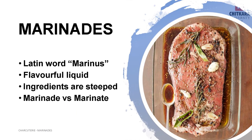A marinade is a seasoned liquid with various aromatics in which meat, poultry, game and even vegetables are steeped. In other words, marinades are a mixture of oil, seasoning and often acidic ingredients like vinegar, wine or citrus juices, and this mixture is used to enhance the flavor of foods. The process of soaking food in marinade is called marinating. The word is ultimately derived from the Latin word marinus, which means marine, referred to the seawater or brine that was used for preserving foods in ancient times.